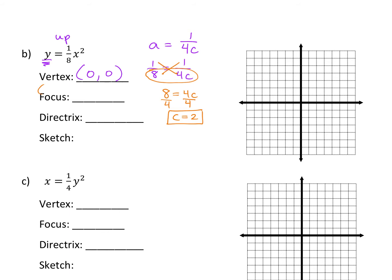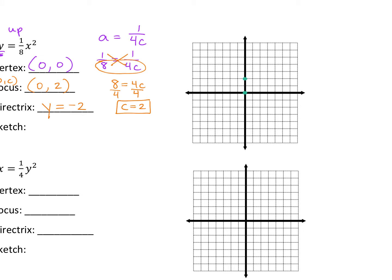Our focus — remember the focus is always at (0, C) in this format — so what's your focus? (0, 2). What's your directrix then? Is it y equals or x equals? Y equals. Y equals negative 2, the opposite. So vertex at (0, 0), focus at (0, 2), directrix at y equals negative 2. Go down two and a horizontal line. We said it opens up, so it's going to look like that.